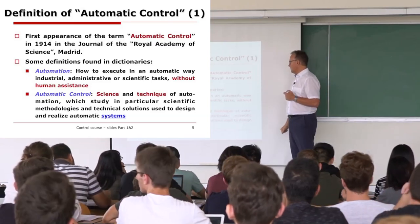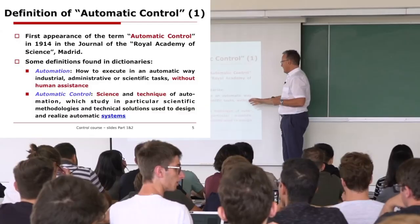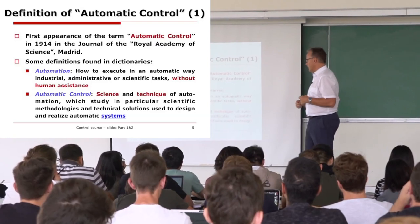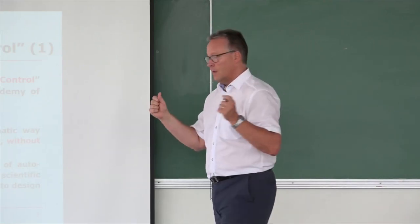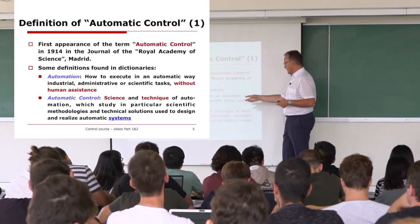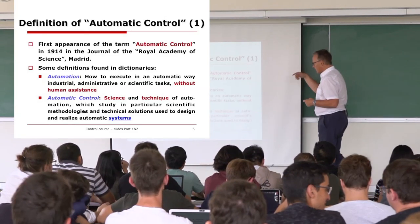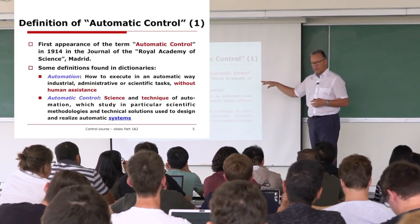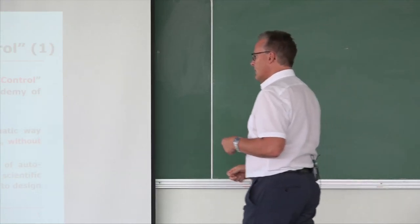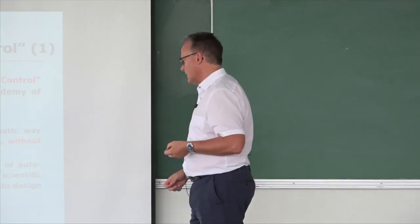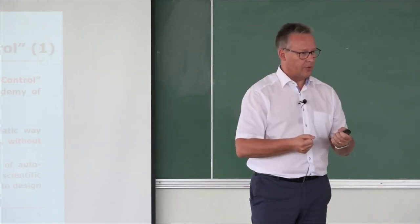The definition in dictionaries: first, automation is the global notion which aims to execute in a completely automatic way different tasks without human assistance. This definition is really huge — you may have applications in industry, in scientific tasks, administrative matters. Among automation, automatic control is more dedicated to the study of science and techniques, which will give you the methodologies and strategies to design and realize automatic systems. Automation is the concept; automatic control provides the tools.